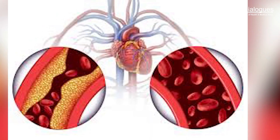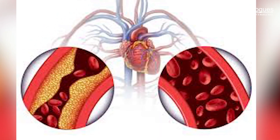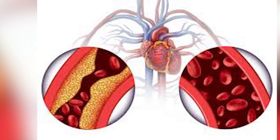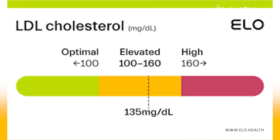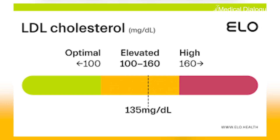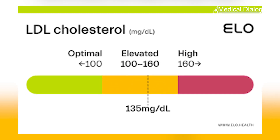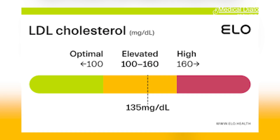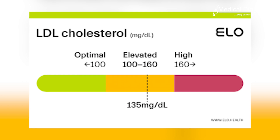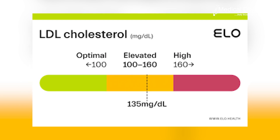Atherosclerotic cardiovascular disease is a leading cause of mortality worldwide, primarily due to coronary atherosclerosis, which begins early and progresses over time. Elevated LDL-C is a major contributor to ASCVD, and lowering LDL-C levels is essential for prevention. Traditionally, LDL-C levels of more than 160 mg/dL were considered elevated, while levels of 100 mg/dL were deemed optimal. However, these thresholds may still be inadequate for preventing atherosclerosis or ASCVD.